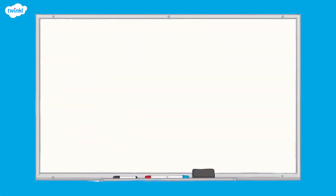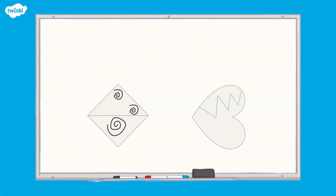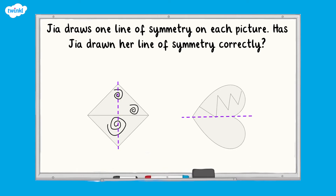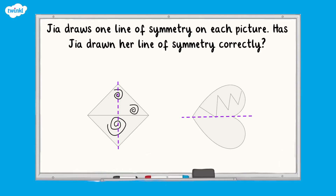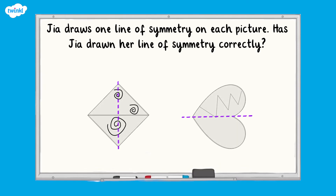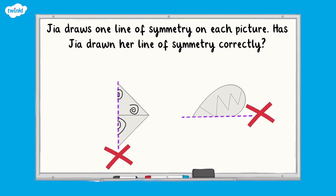Now it's time for our final challenge question. Look at these pictures of shapes with a pattern drawn on. Gia draws one line of symmetry on each picture — has Gia drawn her line of symmetry correctly? Although Gia's lines of symmetry appear to be in the correct place, if we only focus on the shape and take away the pattern, it's important to remember that although the shape may be symmetrical, if the pattern drawn on the shape isn't symmetrical, then the whole picture is not symmetrical and Gia's lines of symmetry are not correct, as each side of the line of symmetry is not identical.